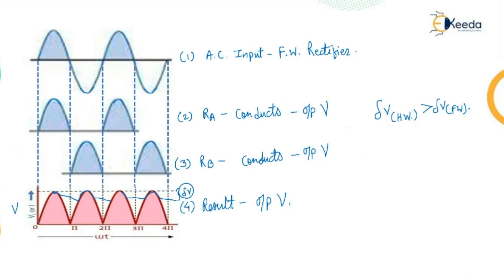This is the output result for the full wave rectifier circuit. Let us stop this discussion for the first two circuits, that is the half wave and full wave rectifier. Hope you have understood the concept of half wave and full wave high voltage generation method — specifically for high DC voltage. Thank you.